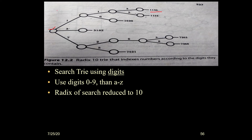For the digit-based trie, consider keys like 1136, 1155, 3, 6293, 1827, 263, 7268, and 7521. The tree branches digit by digit. Comparing the digit-based trie with the alphabetical trie: the digit trie has only 10 possible branches per node, while the alphabetical trie has up to 26 branches per node.